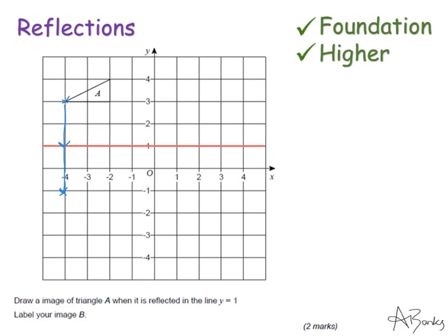I can do that with all my points or I can see now where the triangle ends up and because it's reflected, it's almost the opposite direction, it's been flipped over. One last step, it says label your image B, so I'm going to label B.